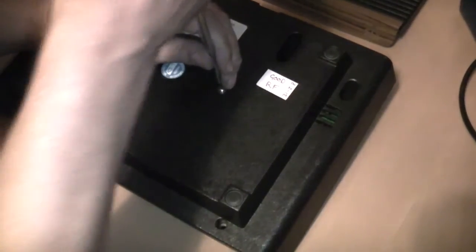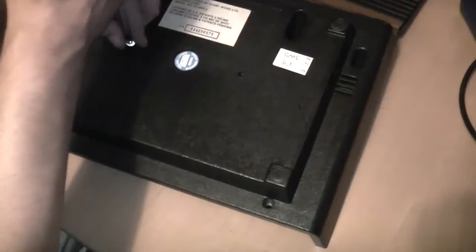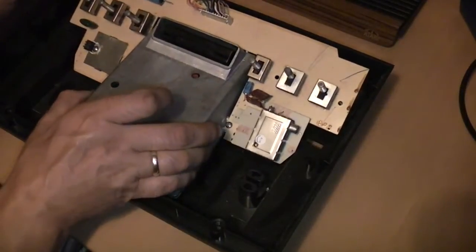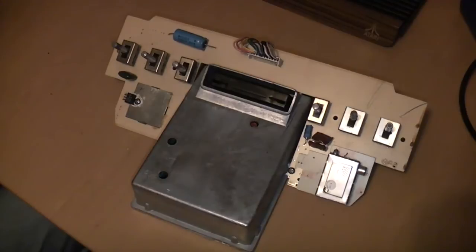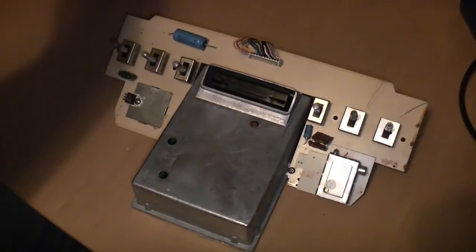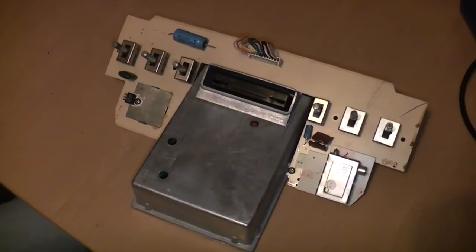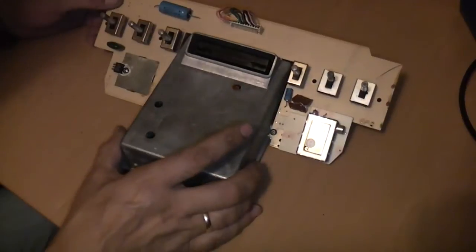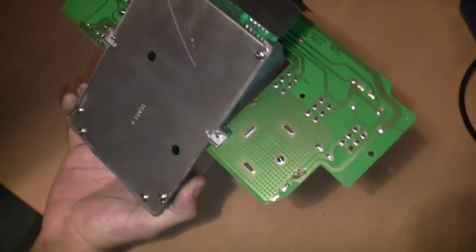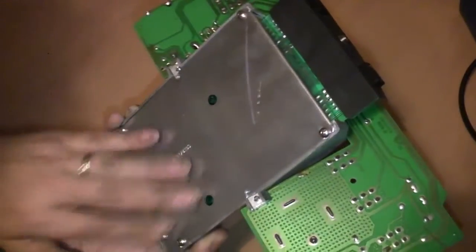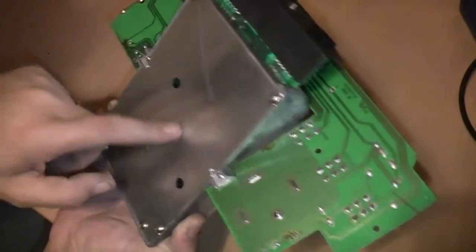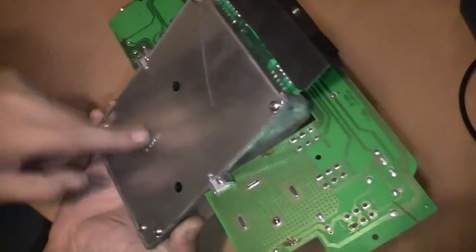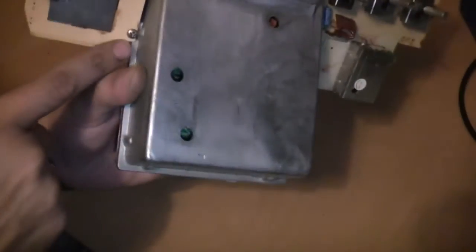I'll take these two screws out that are holding everything in the case, and that should all just lift out. Yeah, there's quite a bit of dust in there. This is your main unit, the motherboard. Basically, we need to separate this part from this part. As far as I can remember, the mods we're doing are actually inside this box here. There's one screw here and one on this side as well.